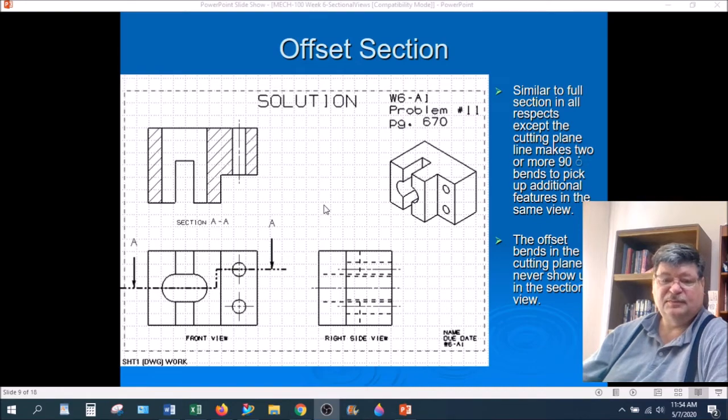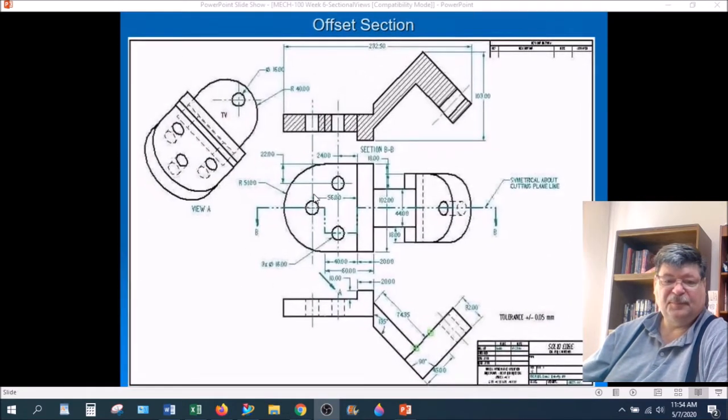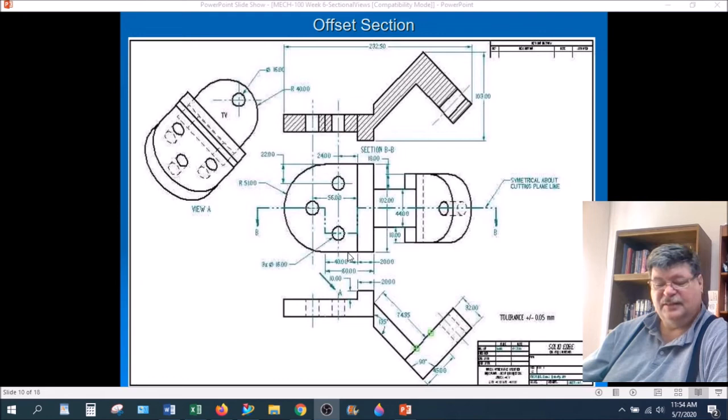By the way, this is one of your problems, your homework problems. Solid Edge didn't quite do the same thing. When it offset a cutting plane line, it actually created or broke the rule by creating new edges inside.